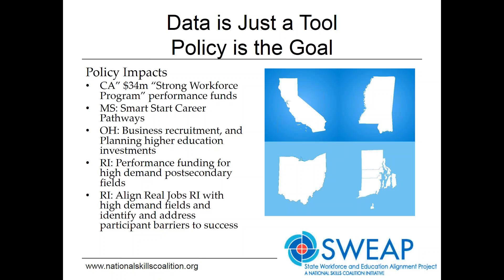California will be using a dashboard to allocate $34 million in Strong Workforce Program performance funds at community colleges. Mississippi will be using pathway evaluators to inform the custom design of smart career pathways for program participants across workforce programs. Ohio will be using its supply tool to promote business recruitment and to plan higher education investments. Rhode Island will be using data tools to guide performance funding for post-secondary education and align the Governor's Real Jobs Rhode Island sector initiatives with high-demand fields.